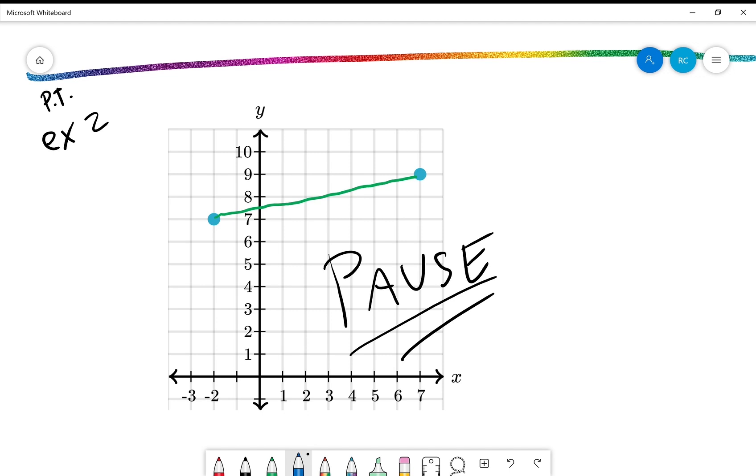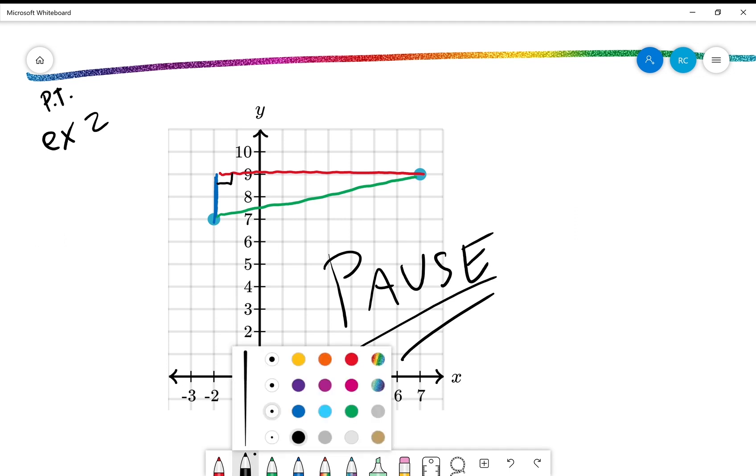All right. So we're going to build a right triangle. Now, last time we built the right triangle underneath, but it doesn't matter which way you go. So I'm actually going to make my right triangle look like this. There. And there. Still works, right? It's still a right triangle.